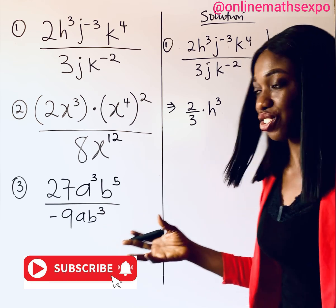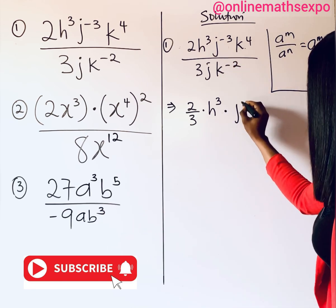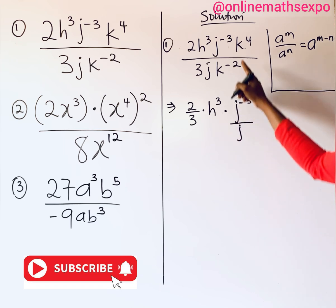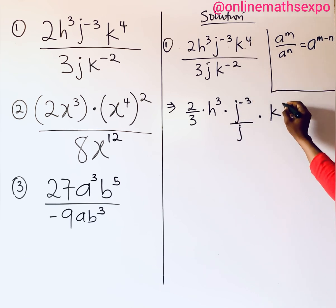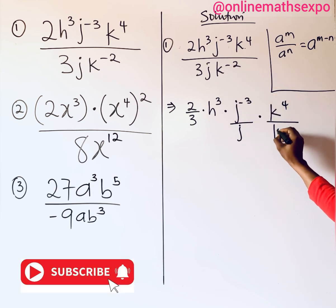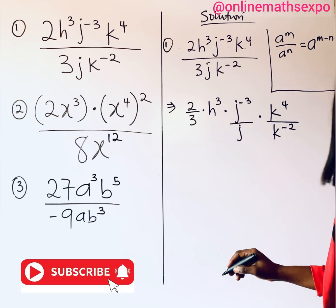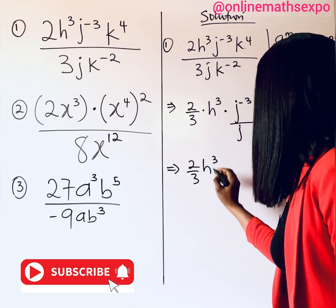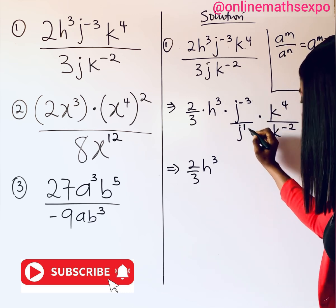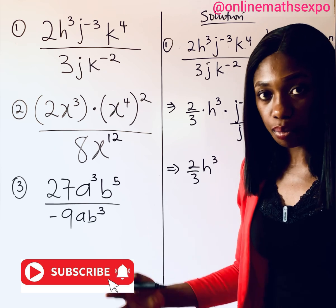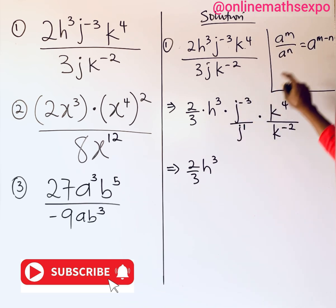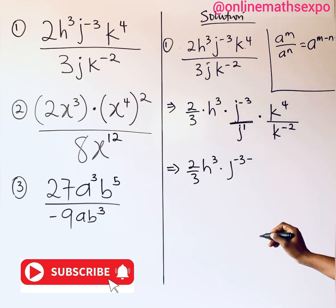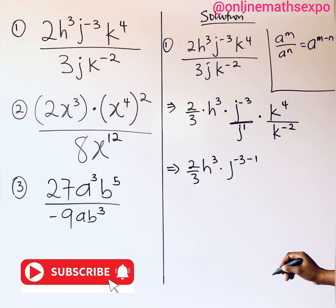We have j to the power of negative 3 divided by j. Remember, any number without a written power has a power of 1. So applying the division rule, we get j to the power of negative 3 minus 1, which gives us j to the power of negative 4.